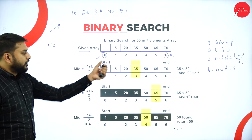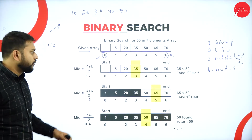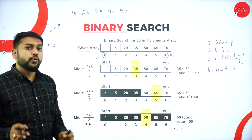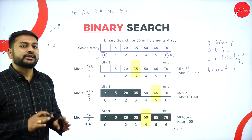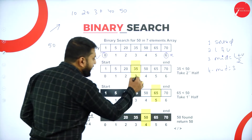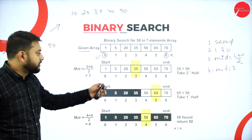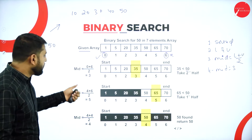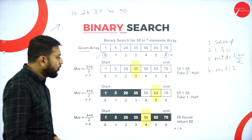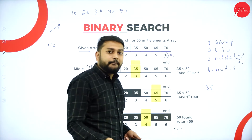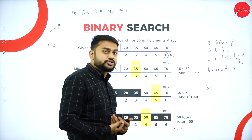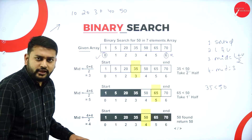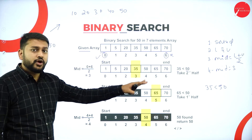I got the mid value — I've marked it in yellow. Now what happens after calculating the mid value? I compare this mid value with the element I want to search. The mid value is 35. I want to search for 50. So I compare: 35 is less than 50.